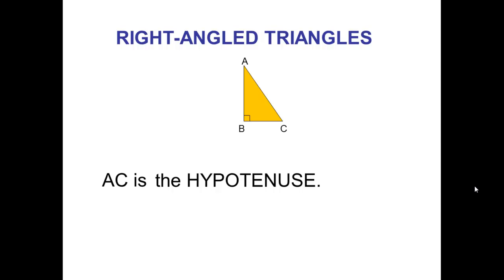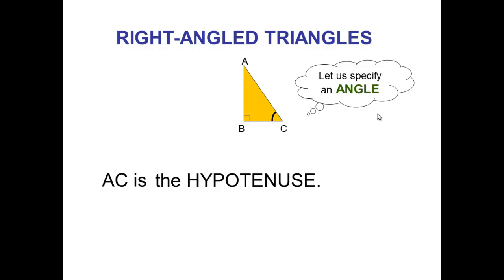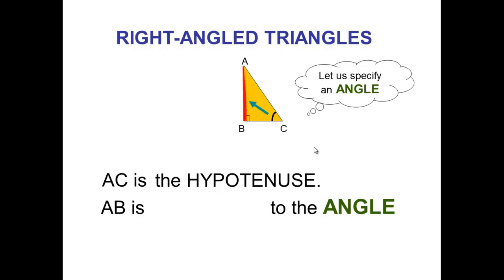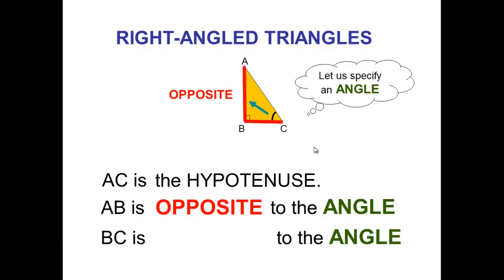Now, how about the opposite and adjacent sides? The first thing we need to do is specify an angle. In this case the angle we specify is ACB. With respect to this angle, AB is opposite to angle ACB, so AB is the opposite side. Similarly, BC is adjacent to the angle ACB, so BC is adjacent.